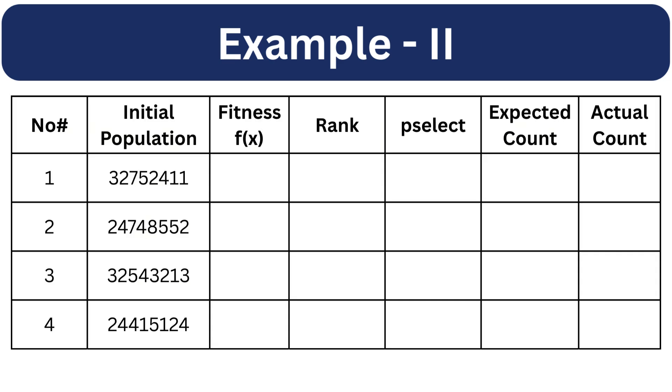Now we will find the fitness of each individual in this population by calculating the number of non-attacking pairs. If you don't know how to do this, we discussed this in the previous video.